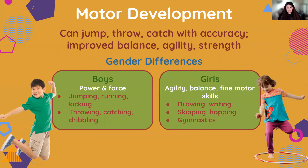What about motor development? School-age kids are becoming more impressive with their motor skills as they continue practicing and fine-tuning them. Now they can jump and throw with accuracy, with improved balance, agility, and strength. However, we do see some general gender differences in motor development. On average, boys tend to have more power and force — they can typically jump farther, run slightly faster, throw further, and tend to be better at kicking, catching, and dribbling. Girls on the other hand tend to have better agility, balance, and fine motor skills — better foot movement like skipping, hopping, and gymnastics, and finer skills like drawing and writing.